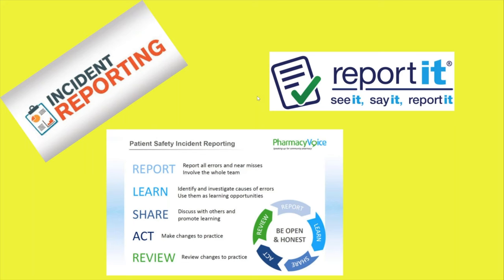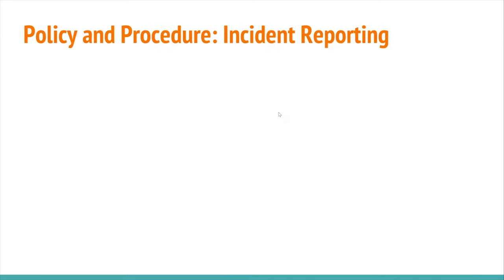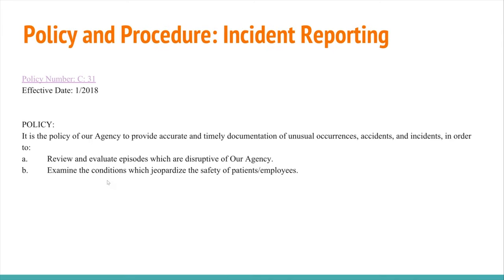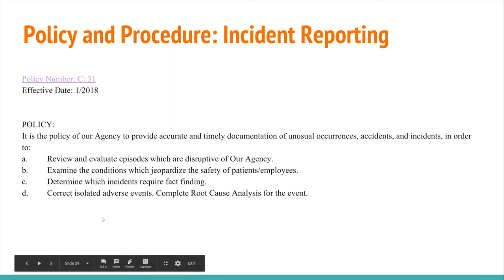The essence of what we need to remember is when you're making a report, you need to discuss who, what, when, where, and possibly even why. Now let's look at a sample incident report policy. Policy C3-C31 discusses incident reporting. It is the policy of the agency to provide accurate and timely documentation of unusual occurrences, accidents, and incidents.